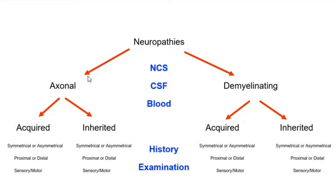You then use tests like nerve conduction studies, CSF, and blood tests to back your findings up and come to some sort of logical differential diagnosis. That will also help guide the treatment aspect. History is key, followed by the other tests that we do in clinical practice.